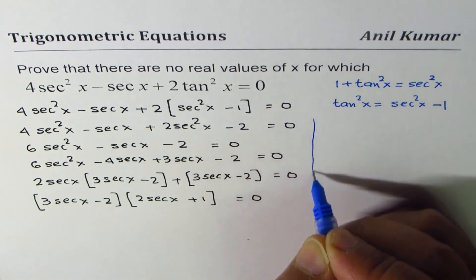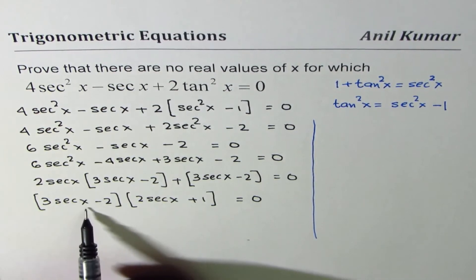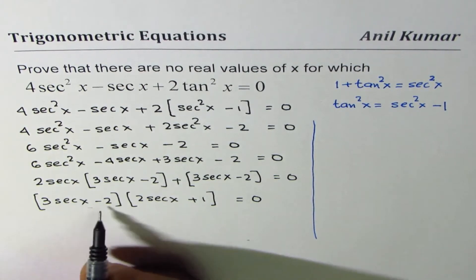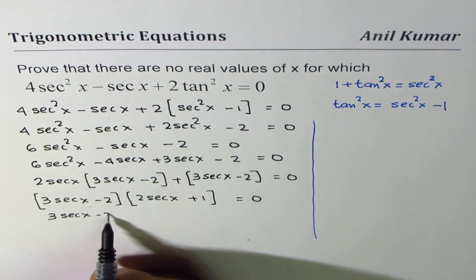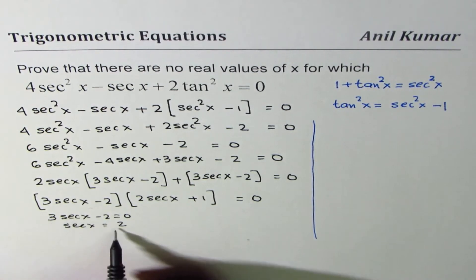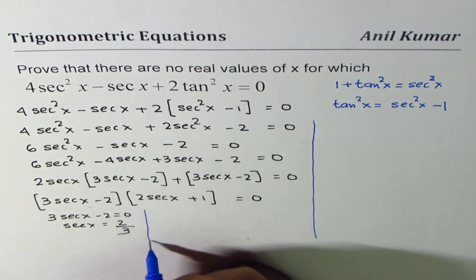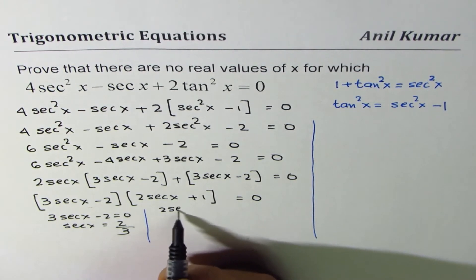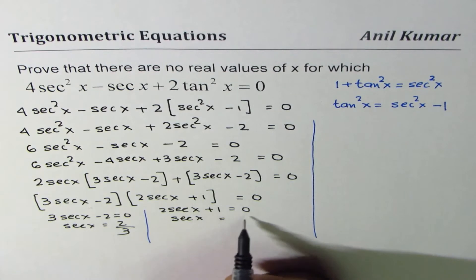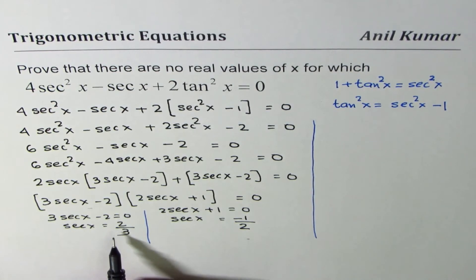We have two factors, so we equate each to zero. From 3sec x minus 2 = 0, we get sec x = 2/3. From 2sec x + 1 = 0, we get sec x = minus 1/2. So these are the two possible values of sec x.